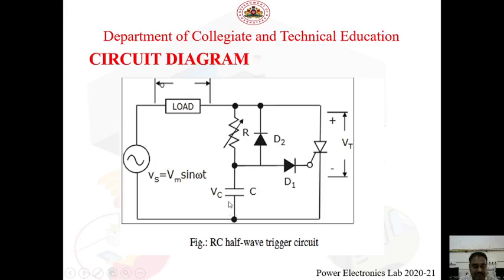The supply is AC. During the negative half cycle, the capacitor charges — the lower plate becomes positive and upper plate becomes negative because the terminal polarity reverses. The capacitor charges in this direction through diode D2. During the negative half cycle, the anode terminal becomes negative, so the SCR is in reverse bias and does not conduct. Only the capacitor charges with lower plate positive and upper plate negative through diode D2.